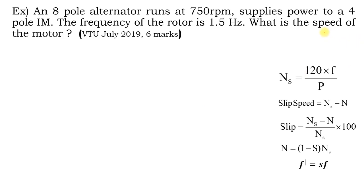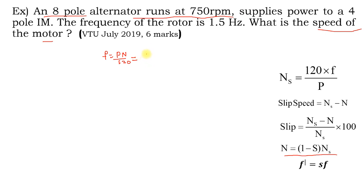In this problem, they ask for the speed of the motor. The synchronous speed ns is not directly given, nor is the frequency. Instead, they give that an 8-pole alternator runs at 750 rpm. Using f = P × N / 120 = 8 × 750 / 120, the generated frequency is 50 Hz.